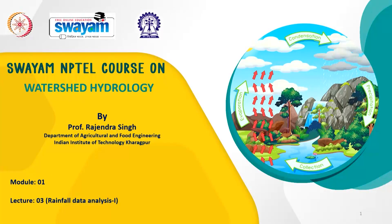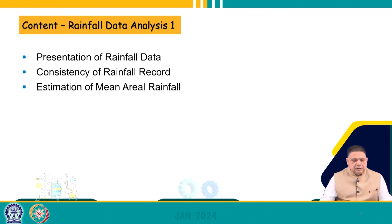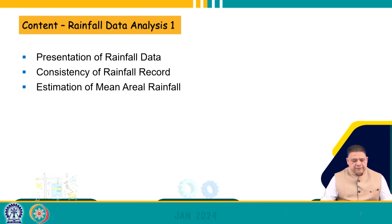Hello friends, welcome back to this online certification course on watershed hydrology. I am Rajinder Singh, professor in the Department of Agriculture at Indian Institute of Technology, Kharagpur. We are in module 1, lecture number 3. The topic is rainfall data analysis part 1. In this lecture, we will talk about the presentation of rainfall data, the consistency of rainfall record, and estimation of mean rainfall.